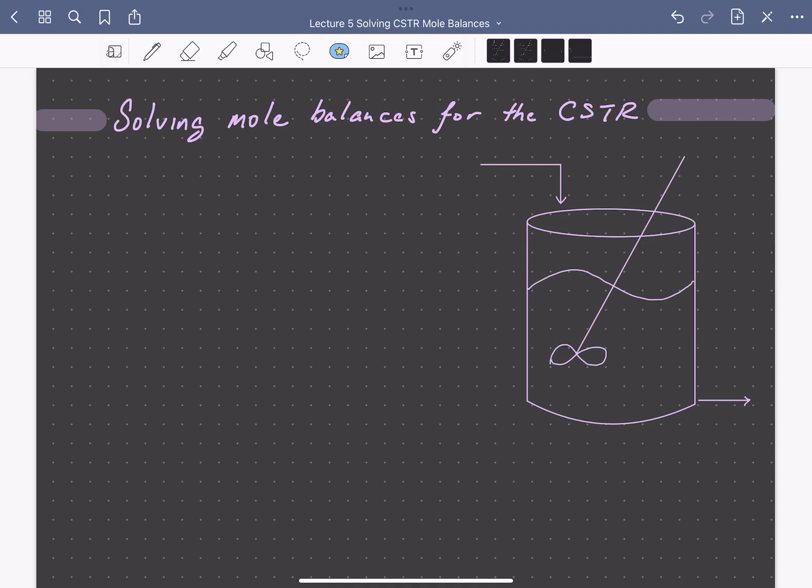Let's look at solving mole balances for the continuous stirred tank reactor. The CSTR is a tank reactor which we assume to be well mixed and spatially uniform, like the batch stirred tank reactor. Unlike the batch reactor, the CSTR is operated continuously, typically at steady state, so the composition and temperature are not functions of time.